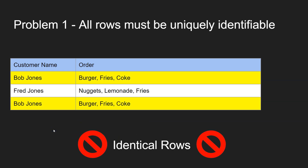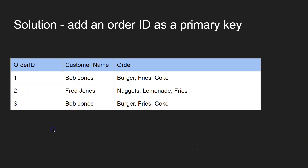The way we fix that is nice and simple — we just add an order ID column. Order ID number one was Bob Jones with his favorites. Order ID two was Fred's order. And then the final order was Bob Jones ordering again. Because we've got these order IDs, that row is no longer identical to the other row. So that's the first part of first normal form done.